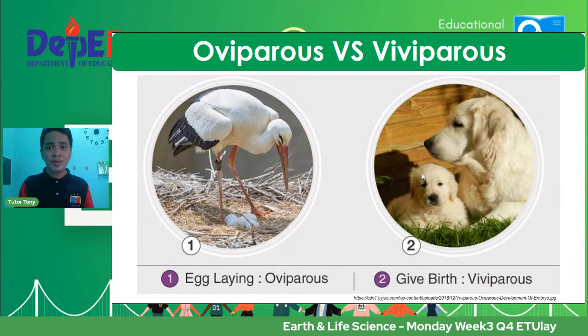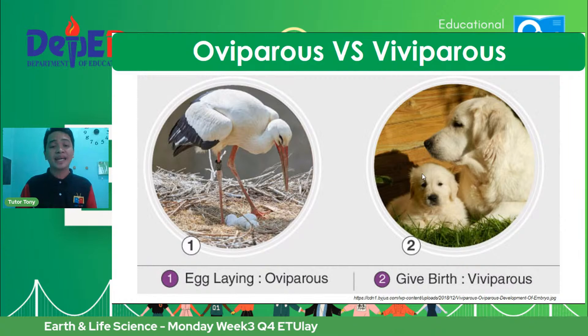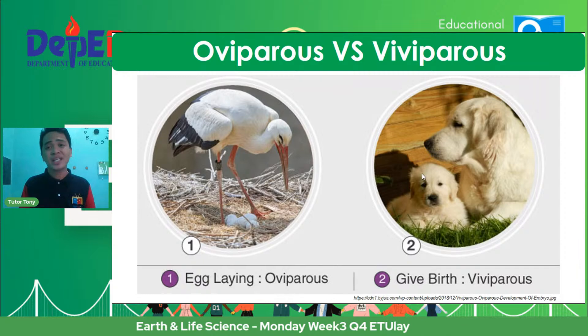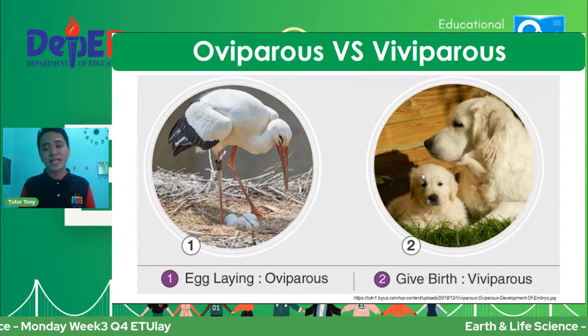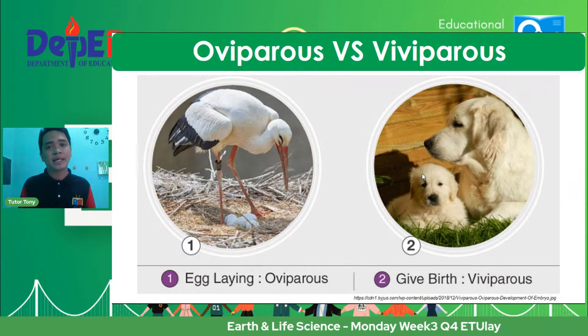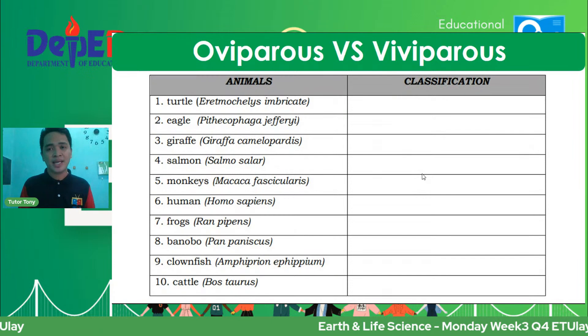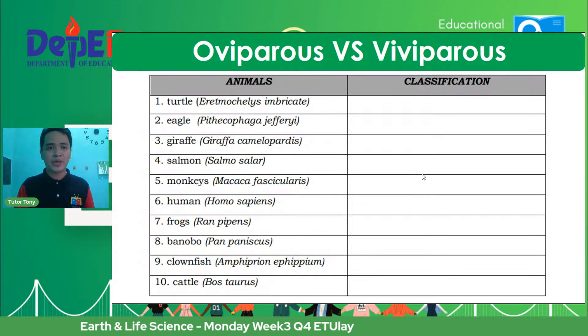We also have to discuss oviparous versus viviparous. Oviparous — these are egg-laying animals: birds, reptiles, insects. Although some mammals lay eggs, generally mammals like us are viviparous — we give birth to live young. Oviparous means they lay eggs; viviparous means buborn alive ang kanilang mga offspring. Some mammals that lay eggs include the platypus and echidna.